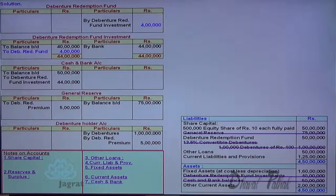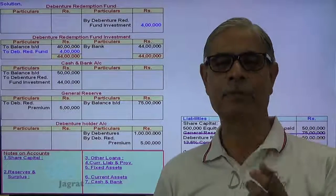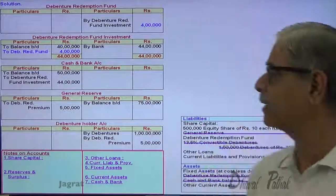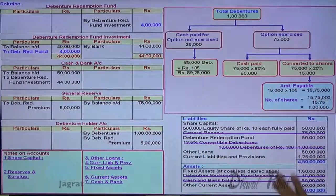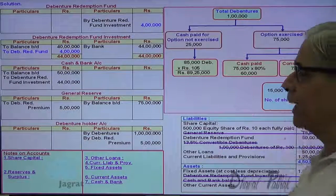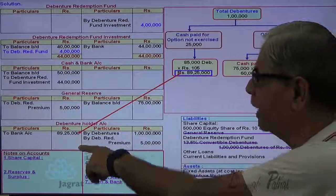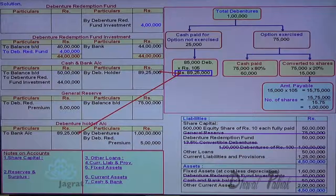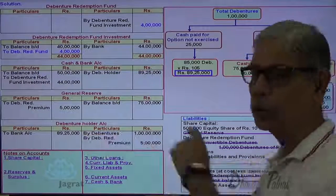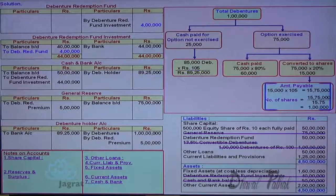Now the main transaction is put through — there is a conversion and a cash payment. I have already prepared the working note for this. ₹89,25,000 is paid in cash: debenture holders account debit, bank account credit — cash payment is done. Now 1 lakh equity shares are issued to the debenture holders at a premium of ₹5.75. Let me prepare a working for this.